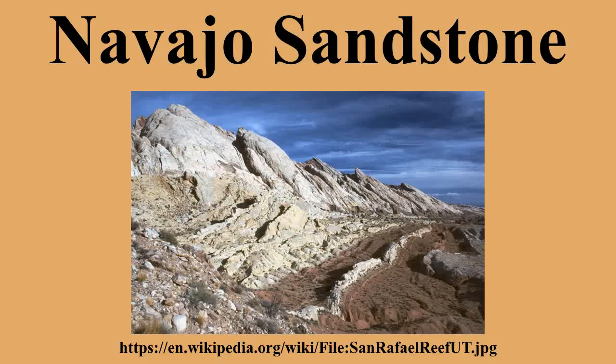Iron Oxide Concretions: The Navajo Sandstone is also well known among rockhounds for its hundreds of thousands of iron oxide concretions. They are believed to represent an extension of Hopi Native American traditions regarding ancestor worship. Informally, they are called mochi marbles after the local Moqui Native American tribe. Thousands of these concretions weather out of outcrops of the Navajo Sandstone within south-central and southeastern Utah, extending from Zion National Park eastward to Arches and Canyonlands National Parks.